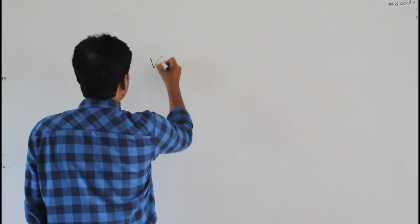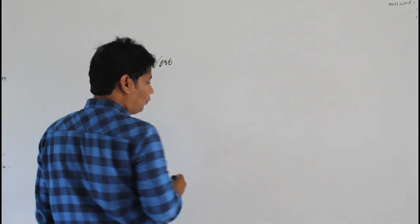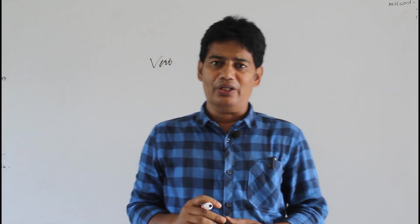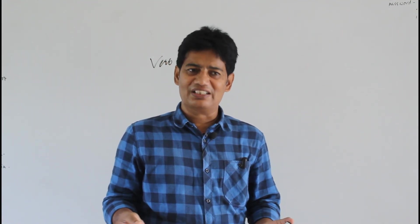Verb is a very important thing. Without it, there cannot be an existence of a sentence. Without a subject, there may be some existence of a sentence. Without an object, there may be some existence of a sentence as well. But without a verb, no sentence can be formed.